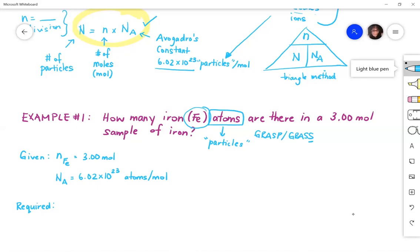What's required? Well, what's required is we're asked to figure out just the atoms of iron, or we're looking for capital N. Right? These are the atoms on their own. So this is what we don't know. Our analysis is to go ahead and use the equation N equals n times Na, or solve for the number of atoms using the number of moles multiplied by the Avogadro's constant. So that brings us to our solution.